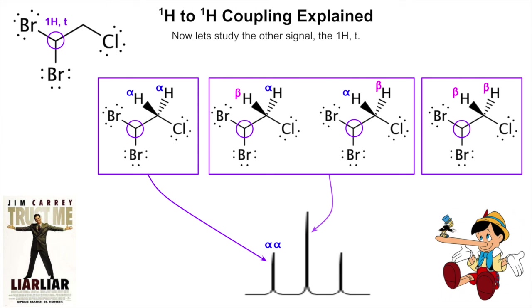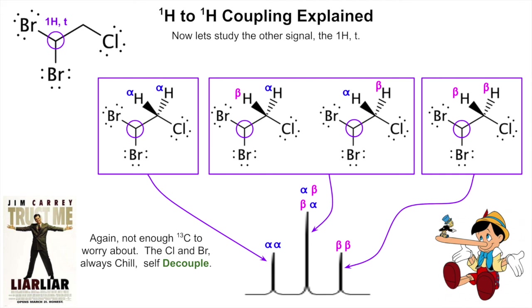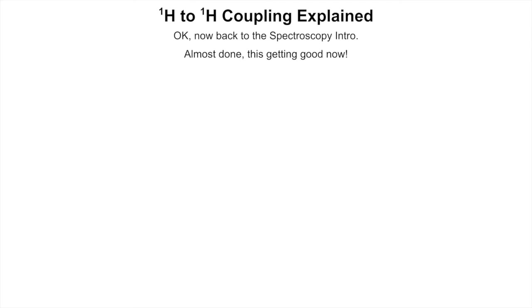The two middle combinations are equivalent, so there are only three unique combinations. The most downfield part of the triplet is caused by the alpha-alpha spin state; the middle, tallest peak has two possibilities — alpha-beta and beta-alpha; and the most upfield is the beta-beta. Again, there's not enough carbon-13 to worry about, and the chlorine and bromine are always pretty much in their lowest energy spin state, so we don't see their coupling.